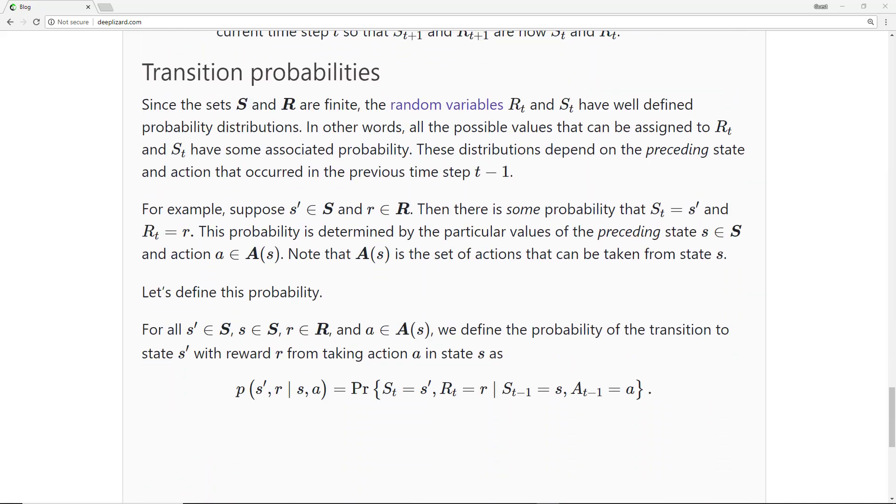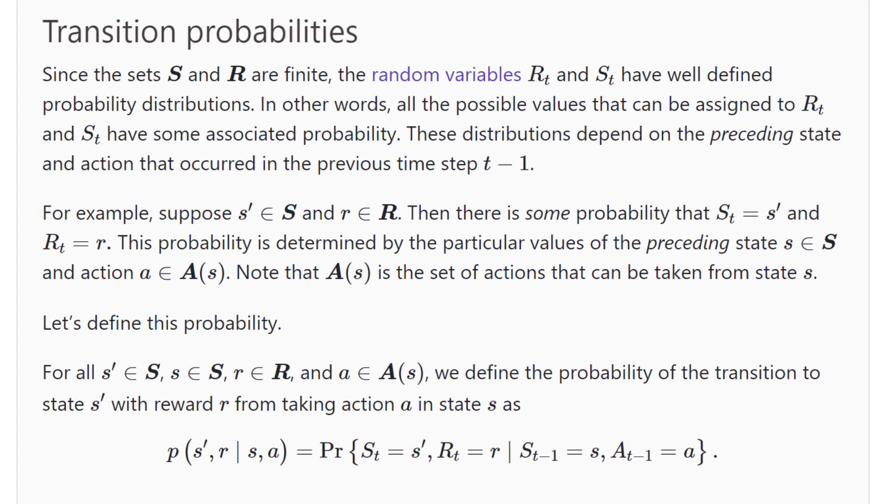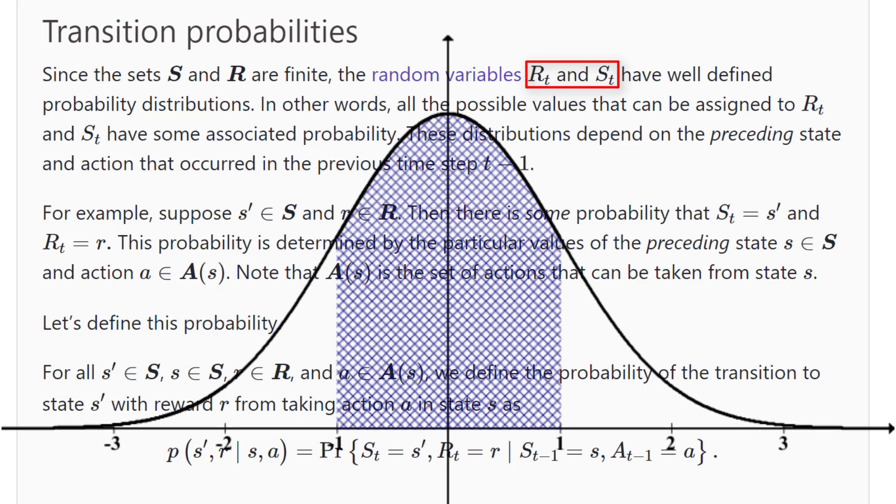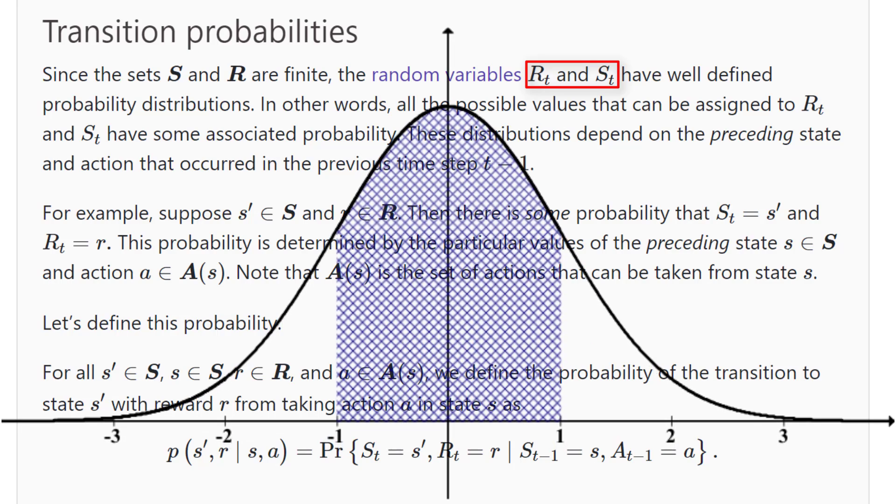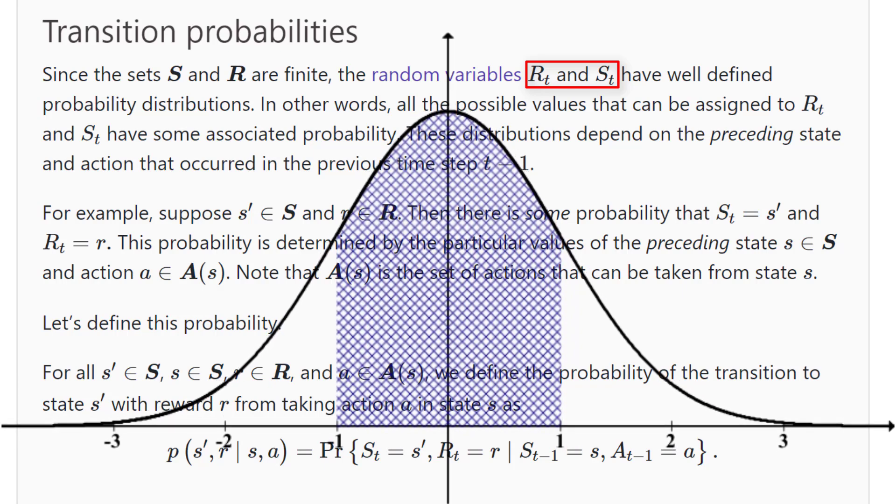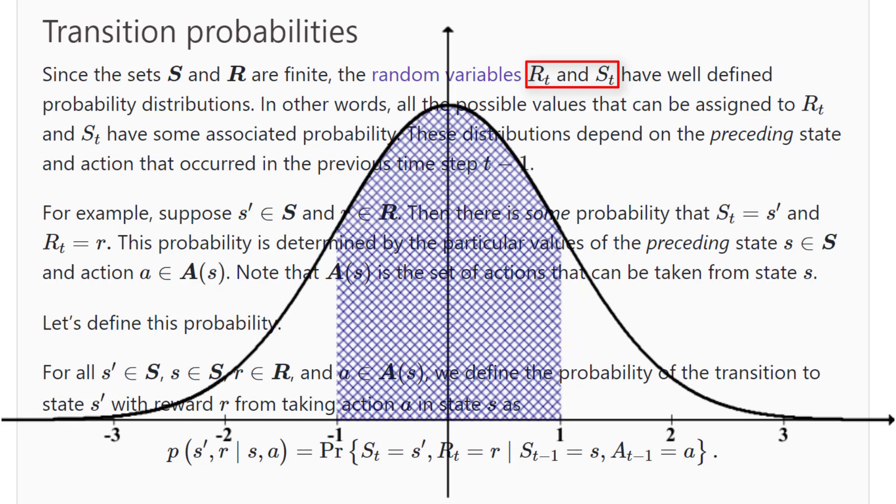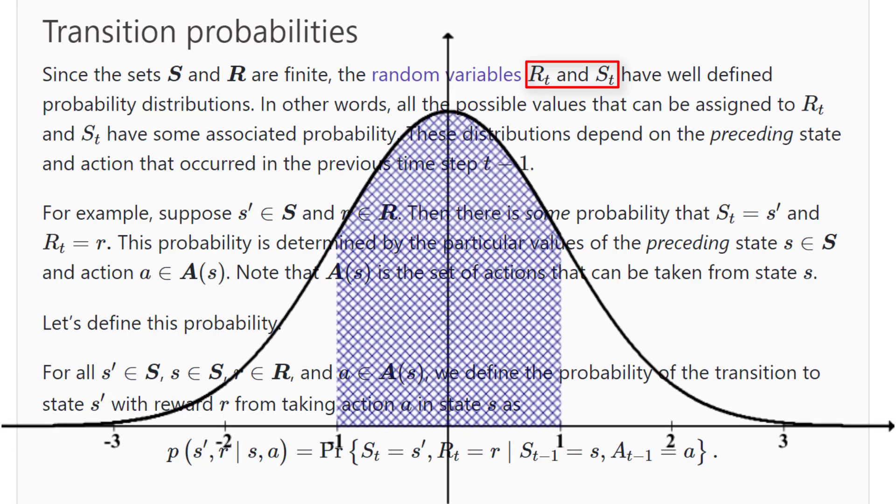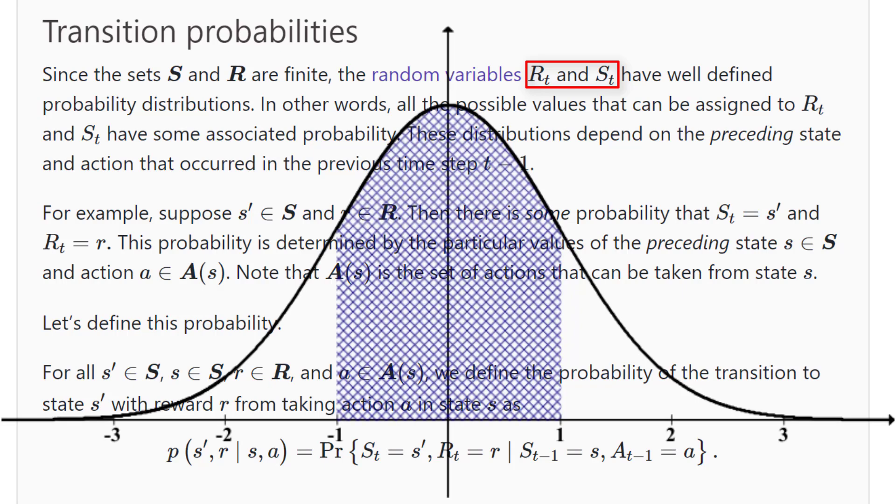Now, since the set of states and the set of rewards are finite, the random variables r_t and s_t that represent the reward and the state at time t have well-defined probability distributions. In other words, all the possible values that can be assigned to r_t and s_t have some associated probability.